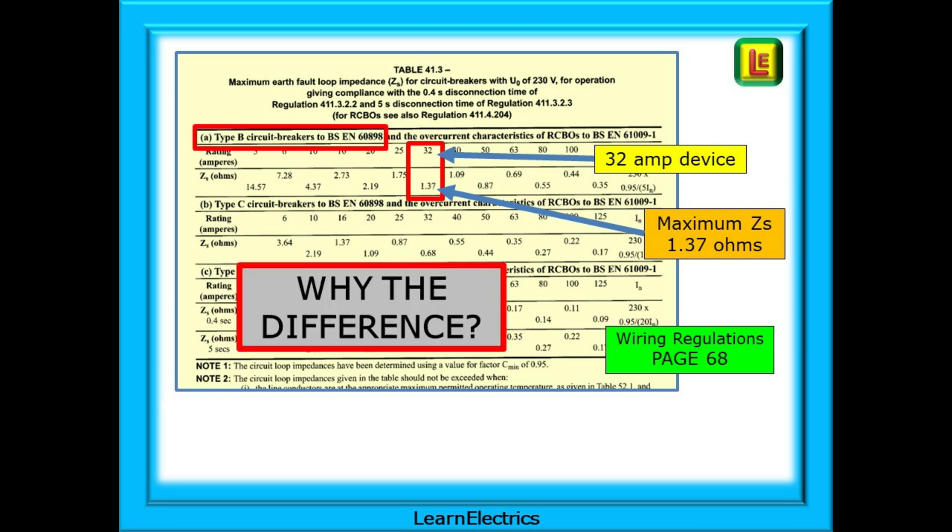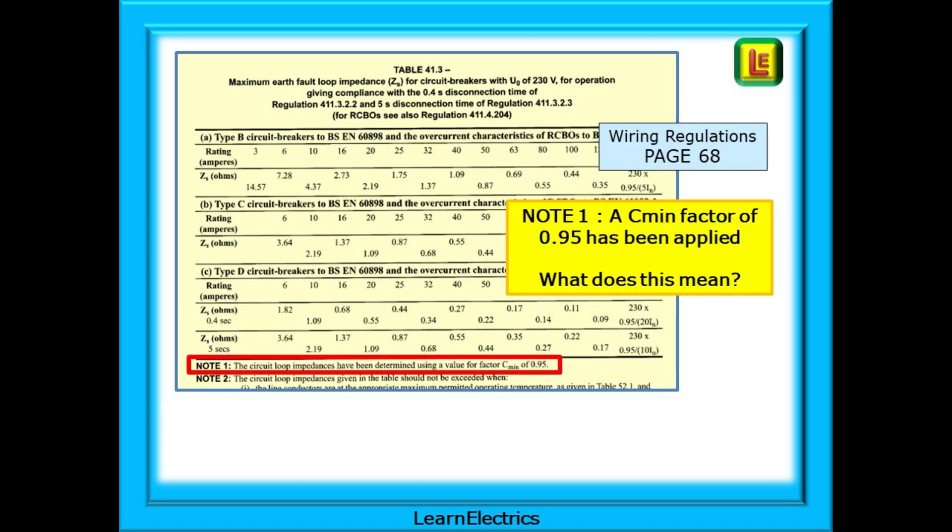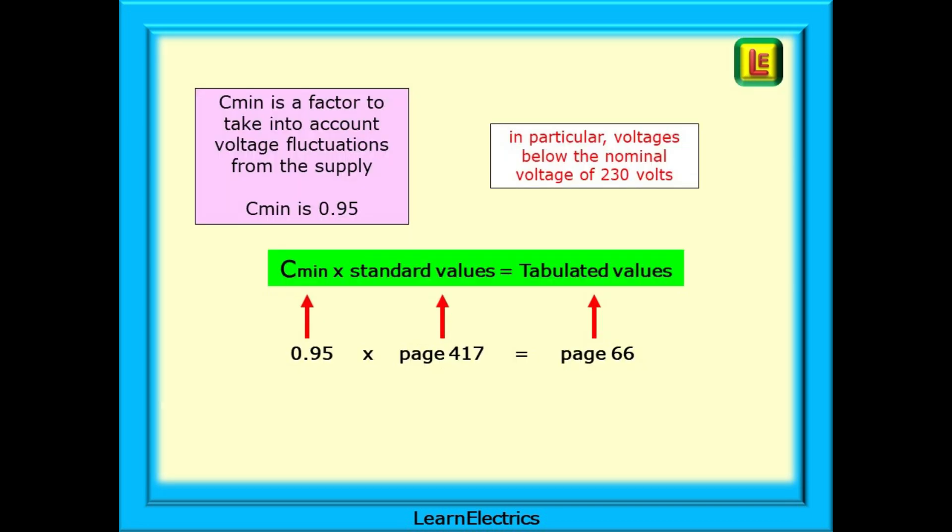So already we found a difference between the tabulated data and the standard or raw data that we started with. Why the difference? Look at just below table 41.3 on page 68 at note number 1 highlighted here in red. It tells us that a Cmin factor of 0.95 has been applied to determine the loop impedance values or ZS. What does this mean? Cmin is a factor to take into account voltage fluctuations from the supply. And it tells us that Cmin is 0.95.